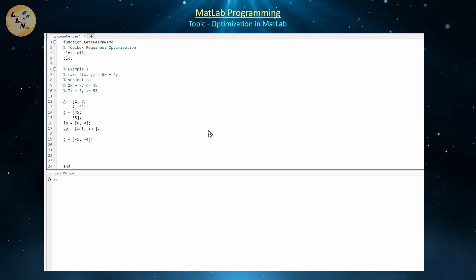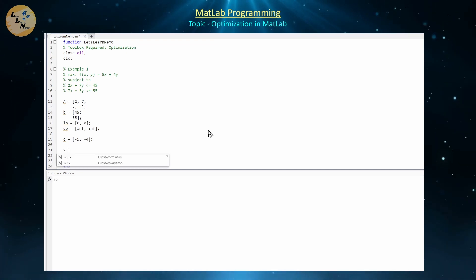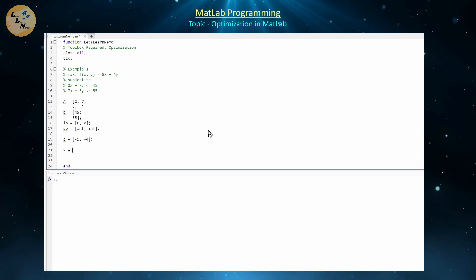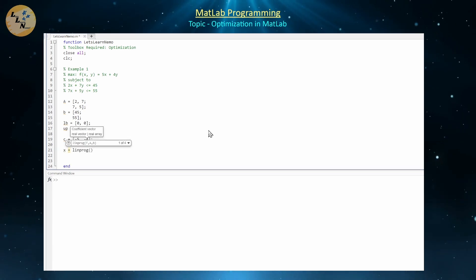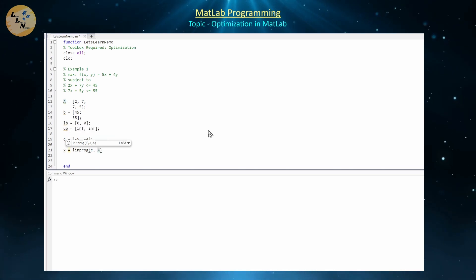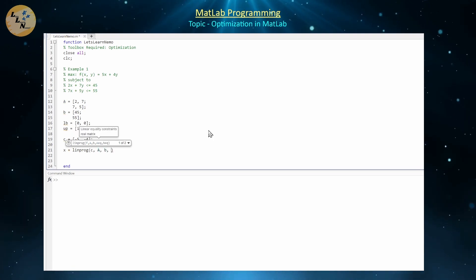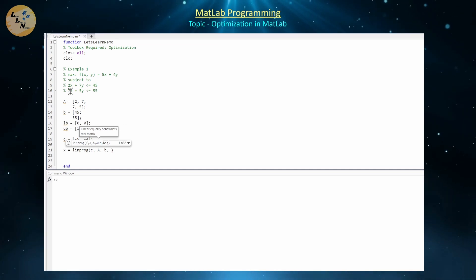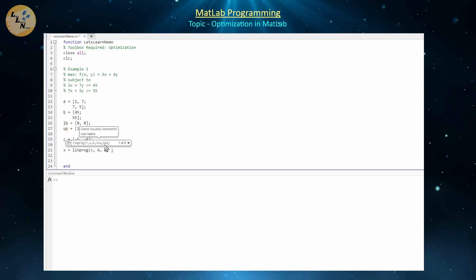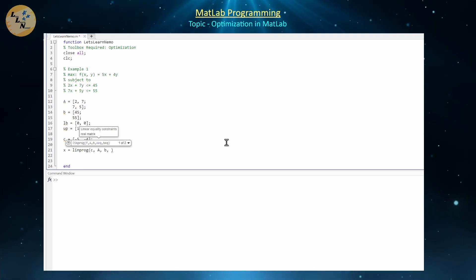Once we have everything defined, we can find our solution. X is our solution variable, and the function we're using is LINPROG (linear programming). We feed it: C (objective coefficients), A and B (less-than-or-equal-to constraints), then the equality constraint matrices Aeq and Beq — for example, if we had 2x + 7y = 45 or 7x + 5y = 55, those would go there.